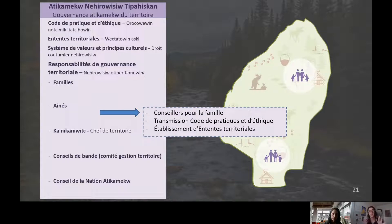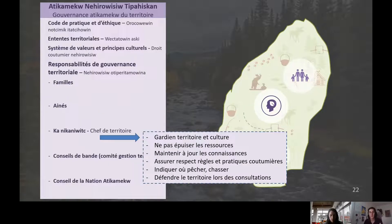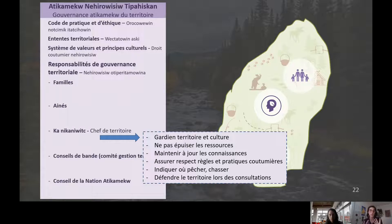Les aînés ont un rôle de conseillers auprès de la famille. Ils participent à la transmission des codes de pratique et d'éthique et à la mise en place des procédés de gouvernance. Le chef de territoire a un rôle de gardien du territoire et de la culture : c'est lui qui s'assure que les ressources ne sont ni épuisées ni gaspillées au sein de son territoire familial, qui maintient à jour les connaissances territoriales, qui s'assure du respect des règles et des pratiques coutumières, qui indique où aller chasser et pêcher selon la santé du territoire, et qui a un rôle de défense du territoire lors des consultations.